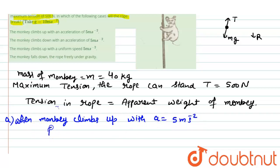Then R will be, the monkey will move up, so R will be M into G plus A. Then we can write it as, put the values and we get the value 600 N.